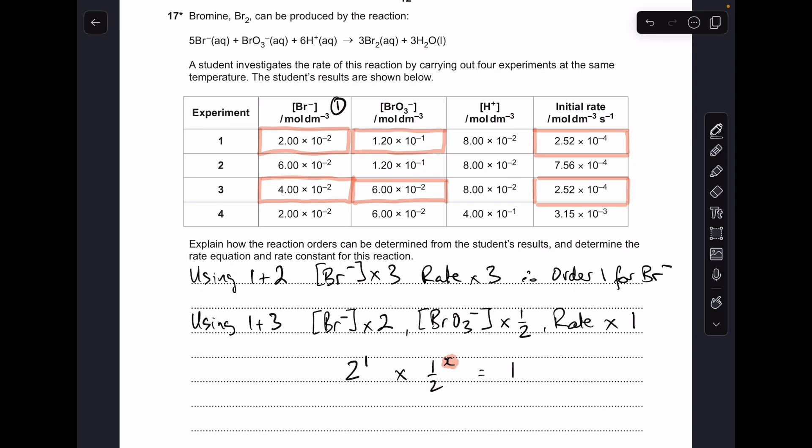So x is the order for the BrO3- ion, has to give that overall rate change of one. So basically, what power does x need to be? And our only options are zero, one, and two.